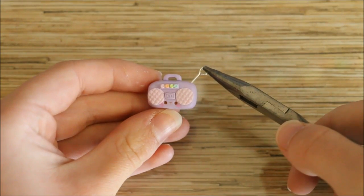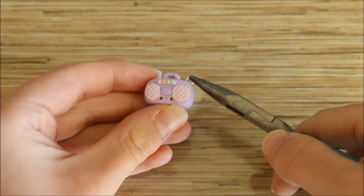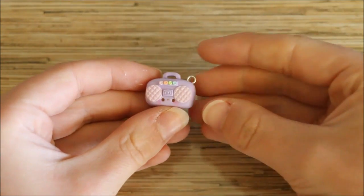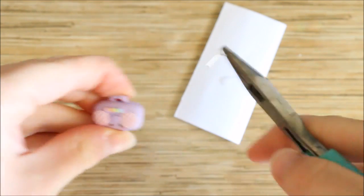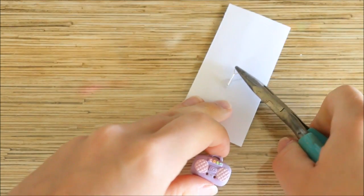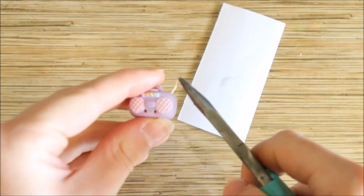You can then add an eye pin if you want to make it into a charm and then bake it in your oven according to your package's instructions. After baking I removed the eye pin and applied some super glue to keep it nice and secure, and then painted on some glaze.